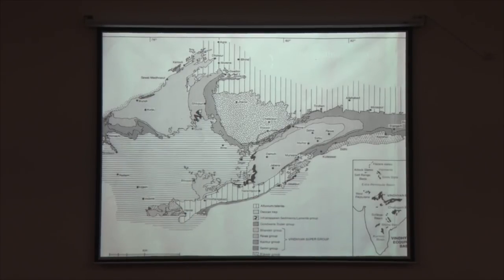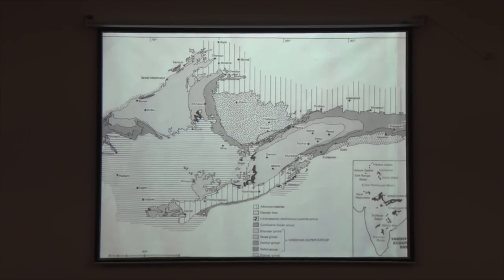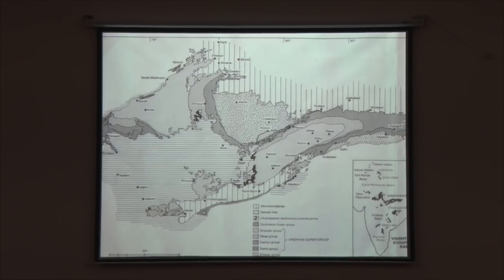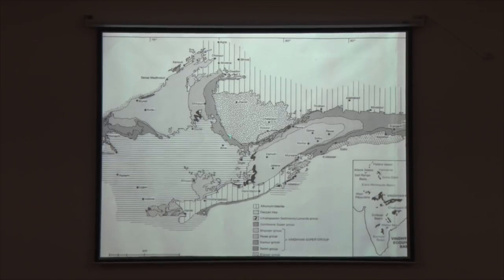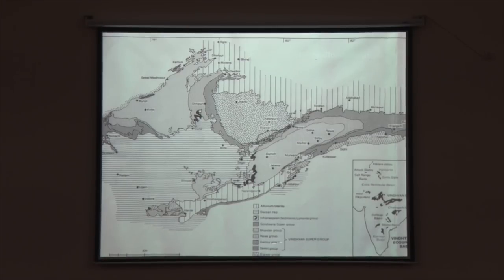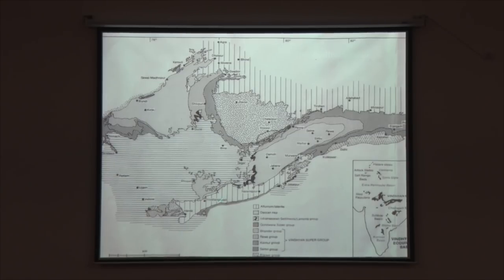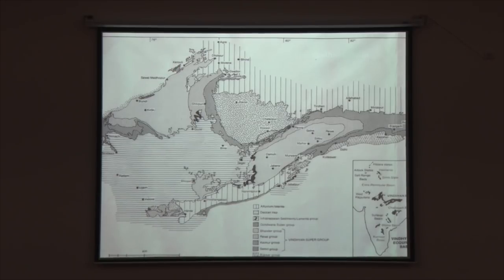Coming to the Vindhya Basin: we have the largest Purana Basin, about 160,000 square kilometers in area, of which only 60,000 square kilometers is exposed — the rest is covered by the younger Deccan volcanic province. The southwestern part is covered by Deccan basalt, with the remaining area represented by various formations of the Vindhyan Supergroup of rocks, including the Kaimur and Pachmarhi groups. Further south, the Satpuras separate the Vindhyas from peninsular south India. The basin is bounded by the Ganga plains and Aravallis, with the Great Indian Desert beyond.